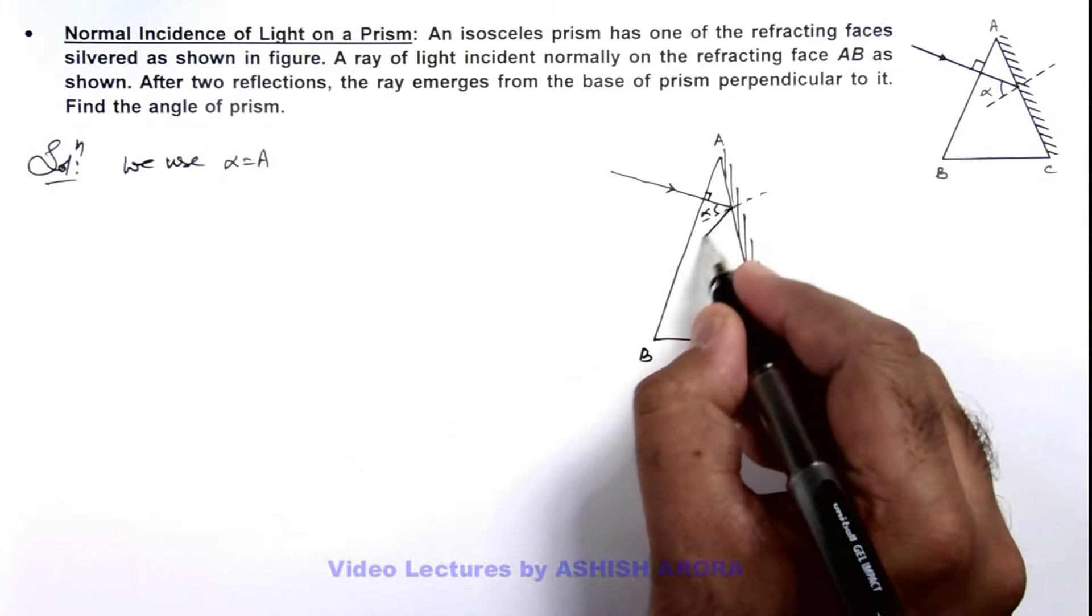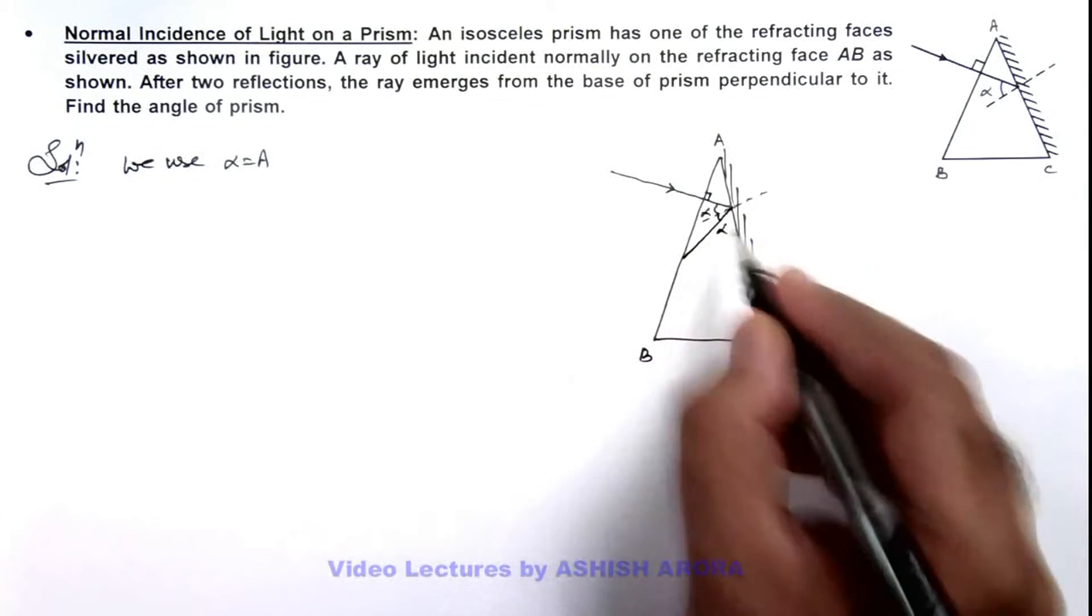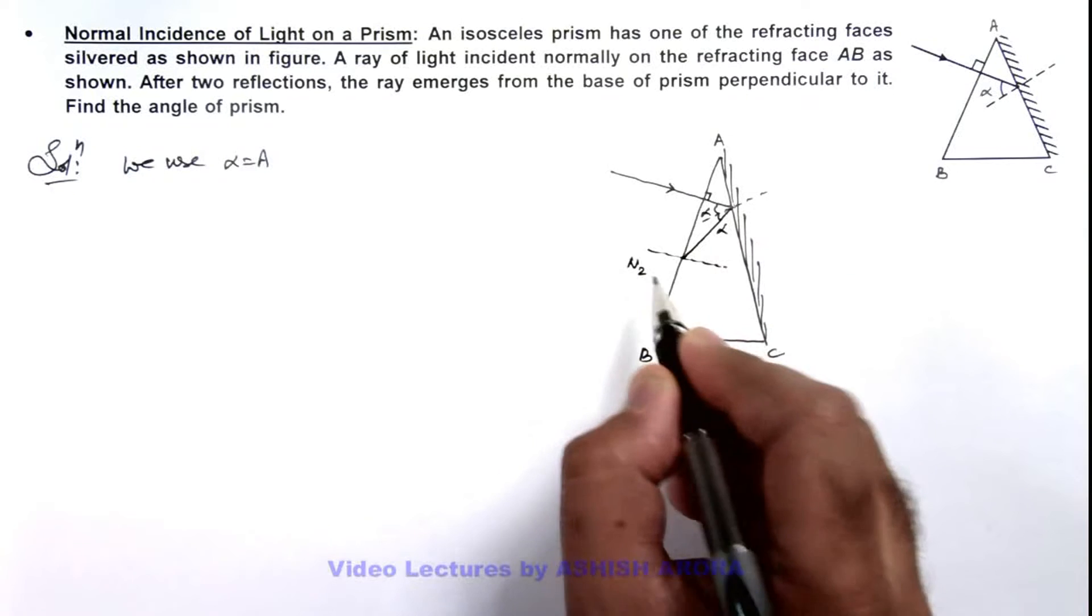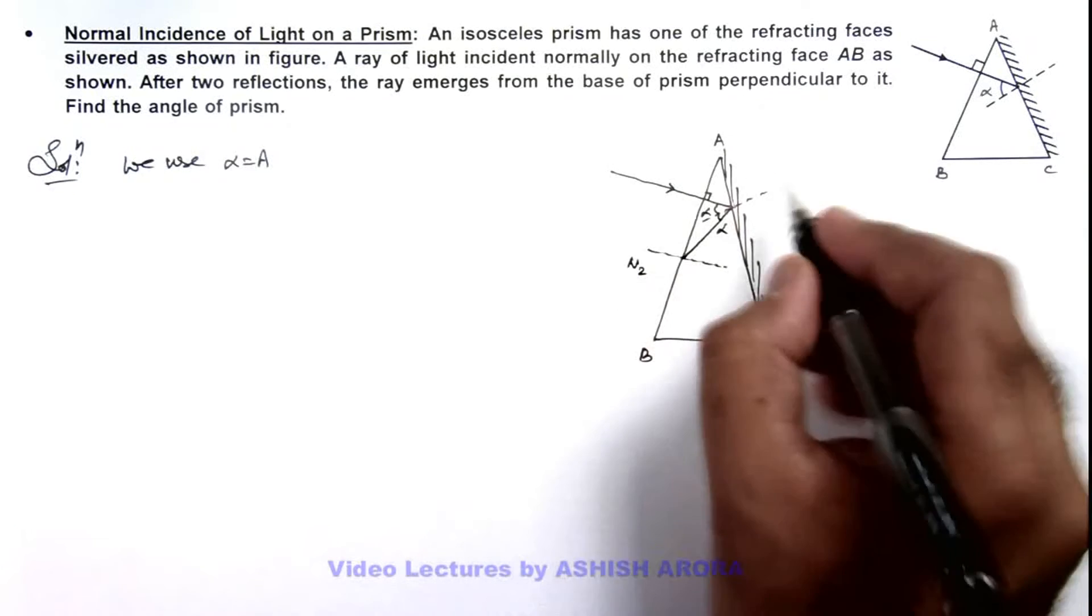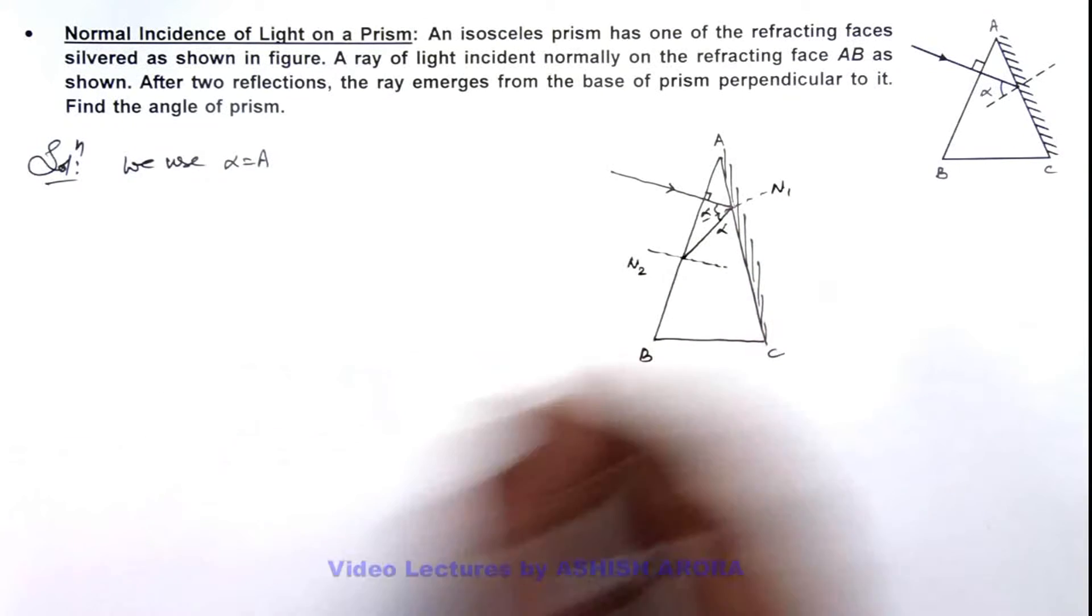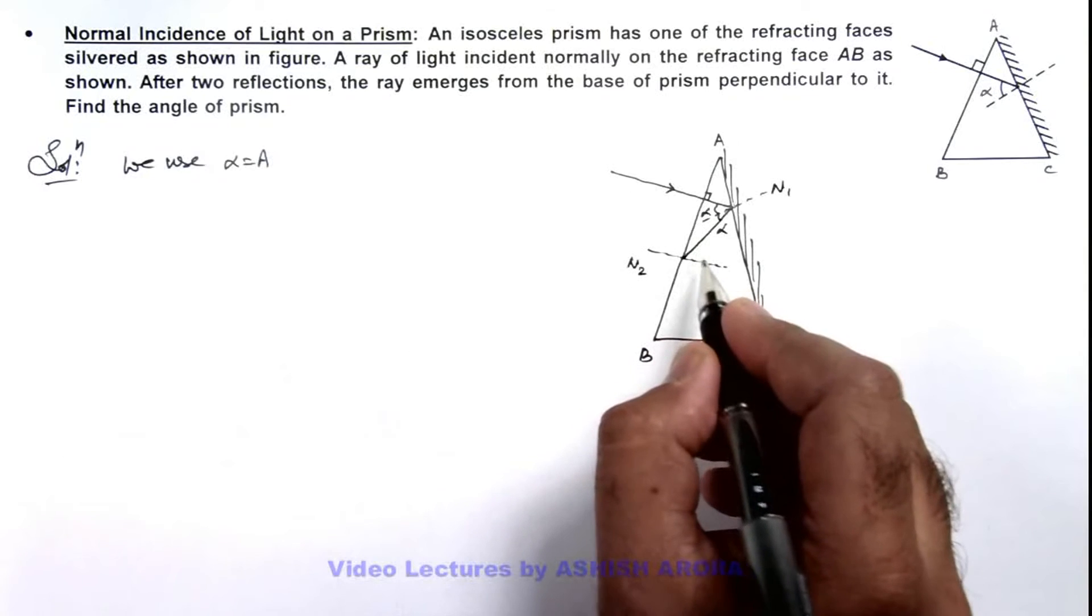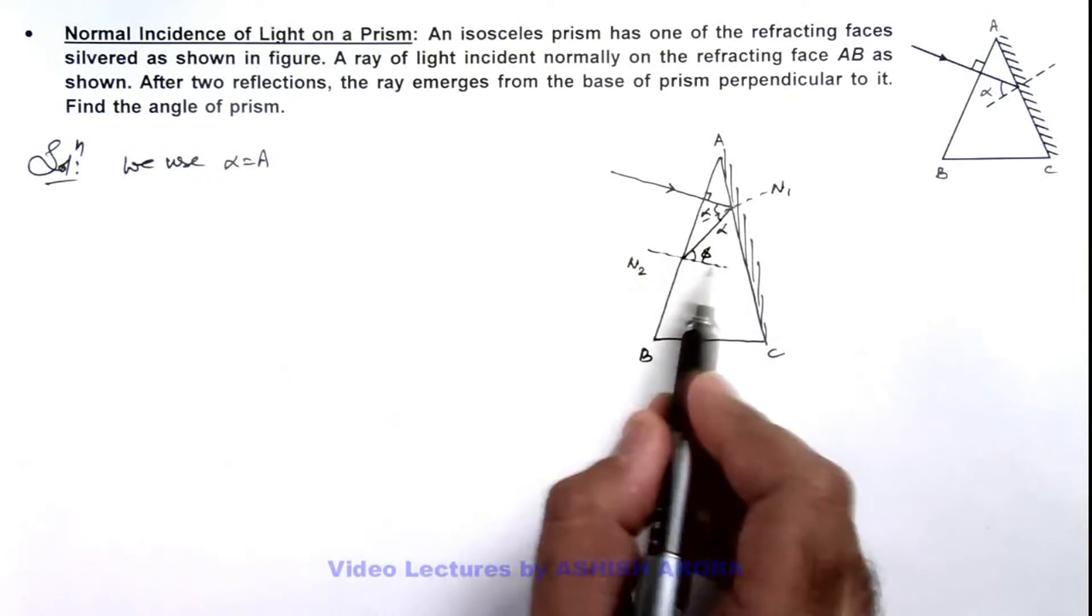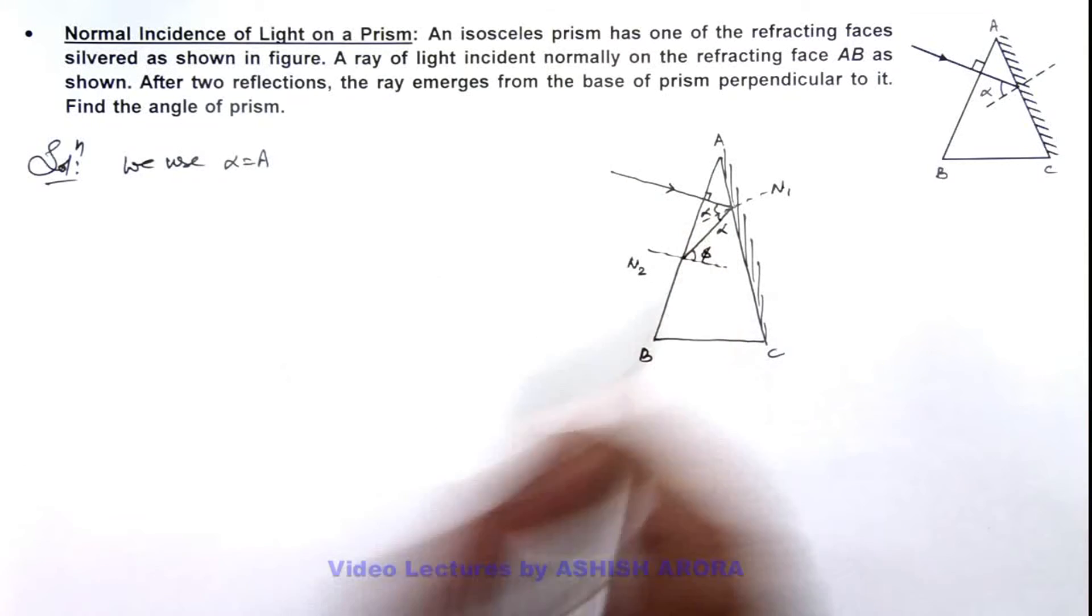When this light is reflected at the same angle alpha, if this is the normal N2 on this face AB, then here say light is incident at an angle phi. Here you can see this normal N2 is parallel to this ray, then we can write.